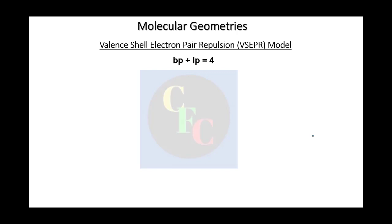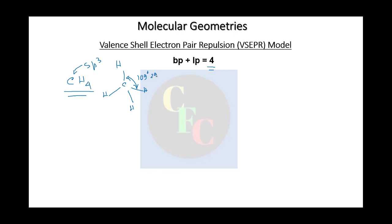Moving to the next level: when we have bond pairs plus lone pairs, we consider the total electron pairs. The most common example is CH4 — I am not going to the hybridization diagrams again since we've already drawn it. CH4 is sp3, we know, and in three dimensions the bond angle is 109 degrees 29 minutes.